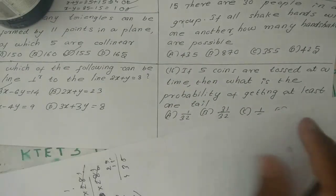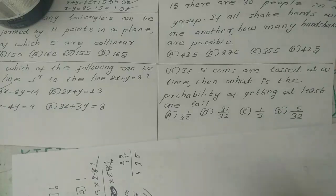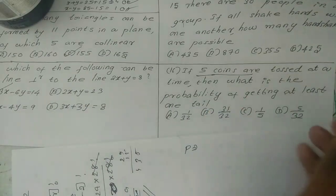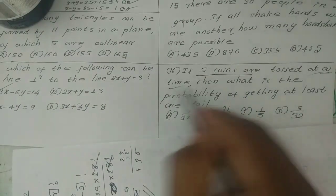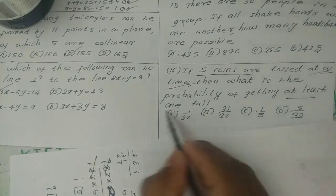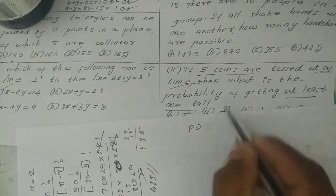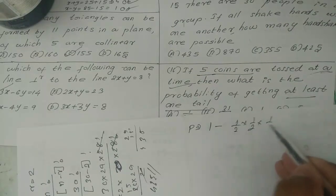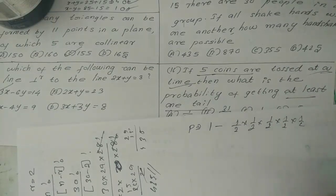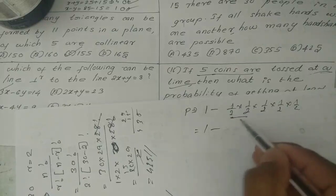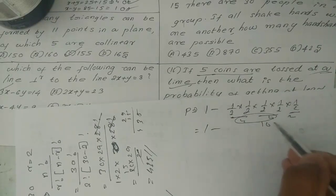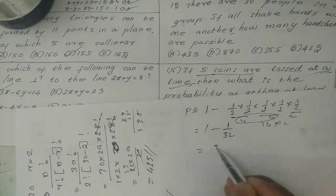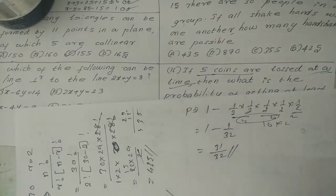If 5 coins are tossed at a time, then what is the probability of getting at least one tail? The probability of at least one tail equals 1 minus the probability of no tails. Probability of no tails equals (1/2) to the power of 5 equal to 1/32. Therefore probability of at least one tail equals 1 minus 1/32 equals 31/32.